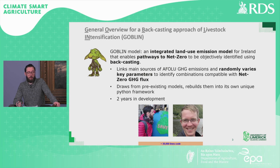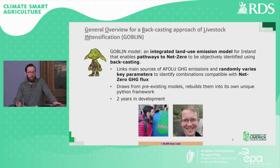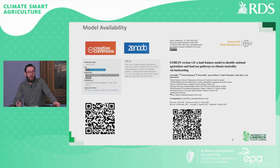GOBLIN stands for General Overview for a Backcasting approach to Livestock INtensification. We classify it as an integrated land use emission model for Ireland that enables us to chart net zero pathways utilizing a backcasting approach. The model links the main AFOLU GHG emissions and randomly varies key input parameters to identify combinations of land uses that are compatible with net zero. It took about two years to develop, engineered primarily by myself and Remy Prudhomme. The model is completely open source and available for download on Zenodo, and we published version one in the Journal of Geoscientific Model Development.